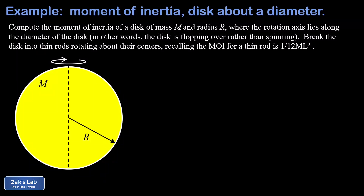In this video we're computing the moment of inertia of a disc, but instead of computing how hard it is to spin the disc, this time we're using a diameter as the rotation axis. In other words, we want to know how hard it is to flip a disc over. We're given a strategy: break the disc into thin rods rotating about their centers, and use the previous result that the moment of inertia for a rod rotating about its center is (1/12)ml².